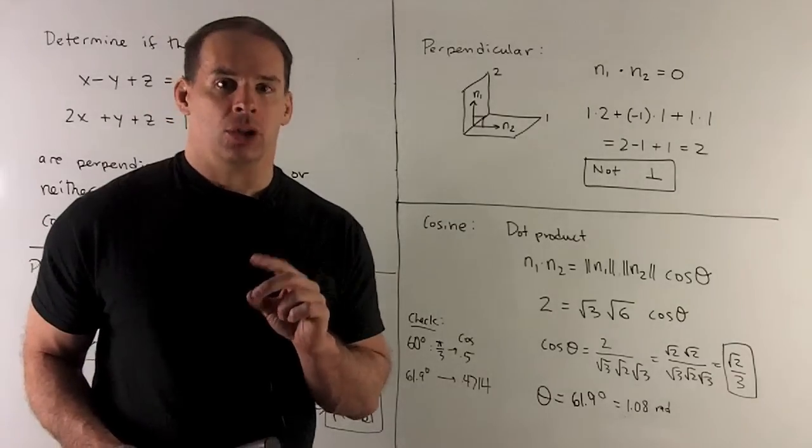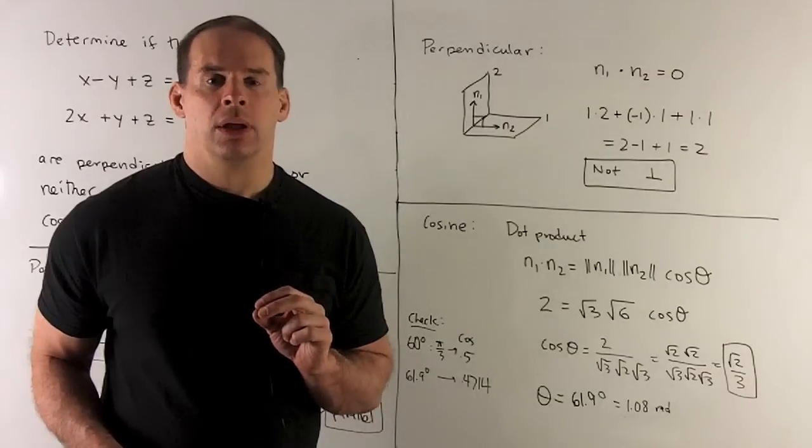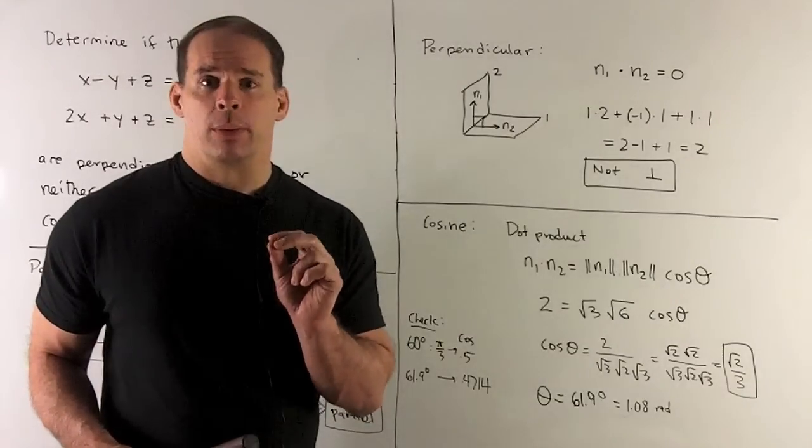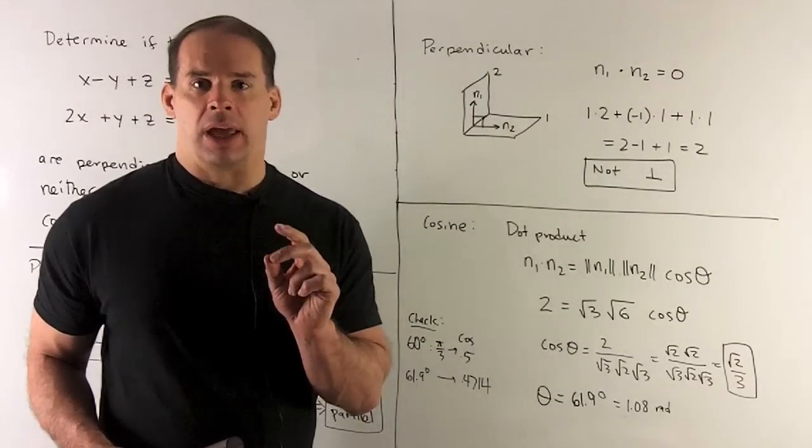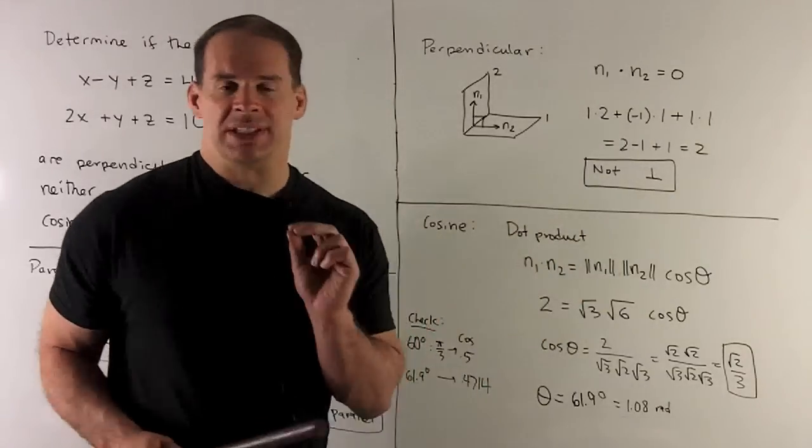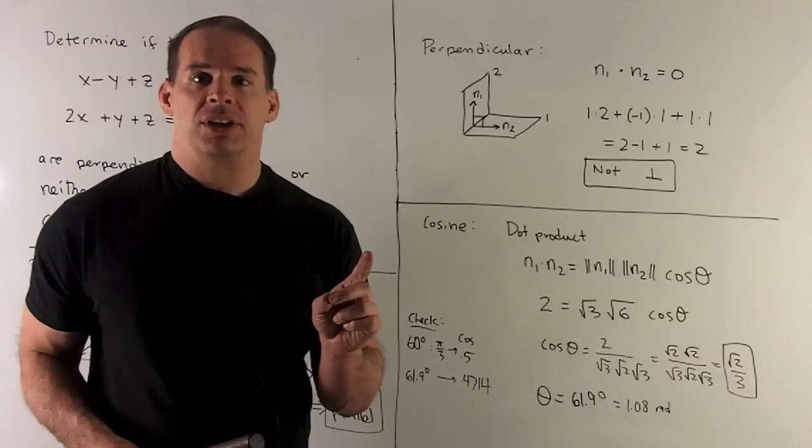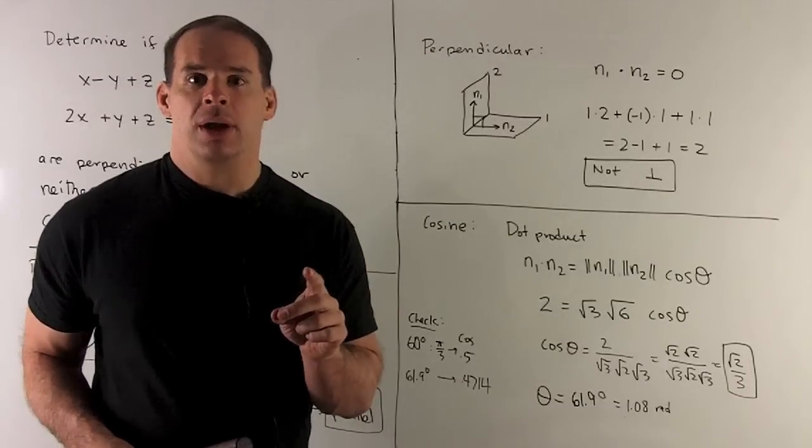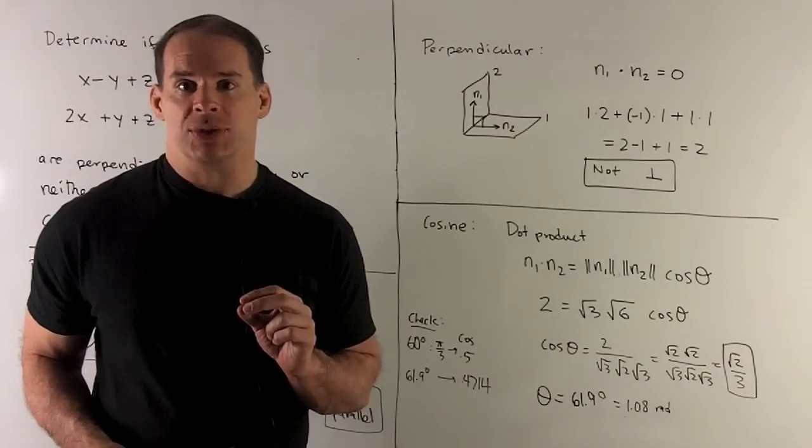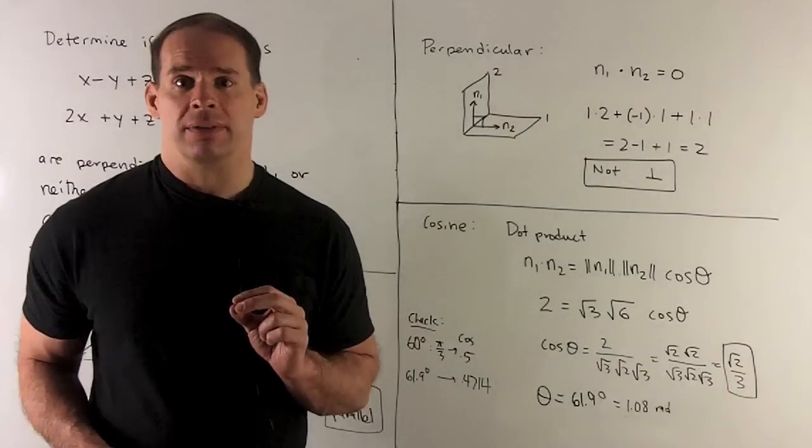Finally, looking for the cosine of the angle between them, what are we going to do here? Well, we're going to take the formula for dot product. One way is to do this multiplication and add formula that we just did. Another way is to take the length of your first vector times the length of your second vector, multiply by the cosine of the angle between them. So we're going to use that formula to get cosine of our angle.